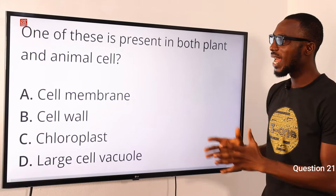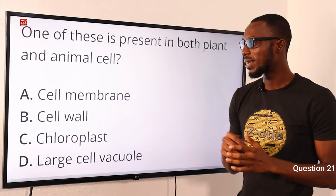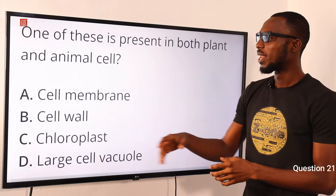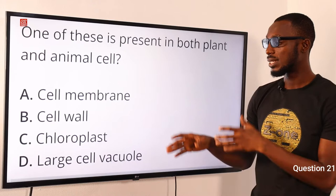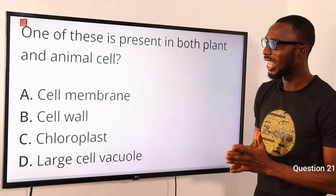Question 21: One of these is present in both plant and animal cell. The correct answer is the cell membrane — this part is present in both plant and animal cells. The cell wall is present in plants but absent in animal cells. Chloroplast is for photosynthesis and is present in plant cells but not in animal cells. The cell vacuole can be large in plants but in animals it can be present but small. So the most viable option here is option A, cell membrane.